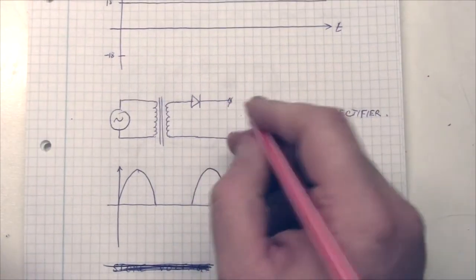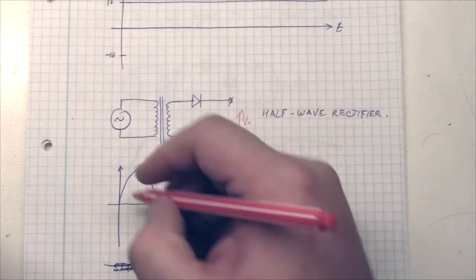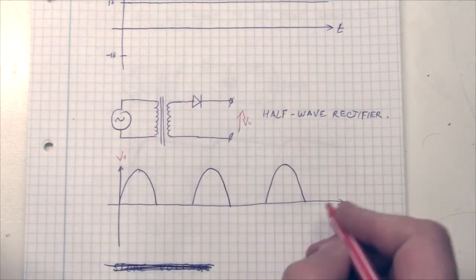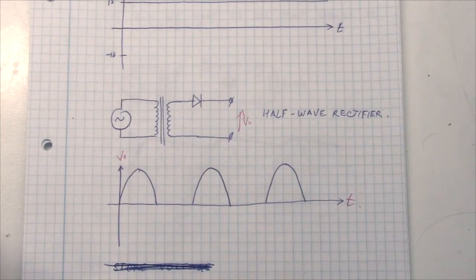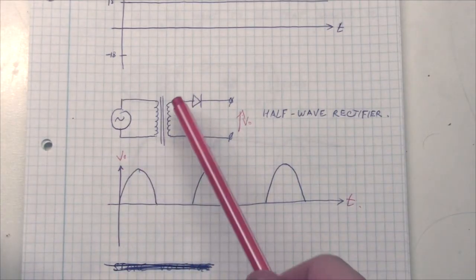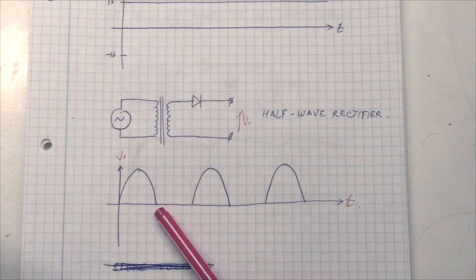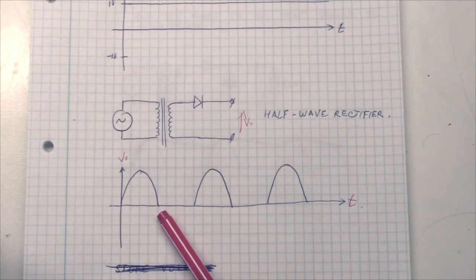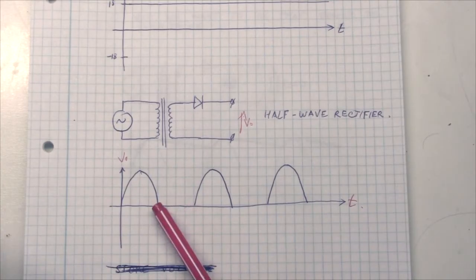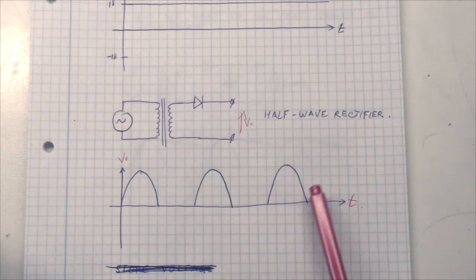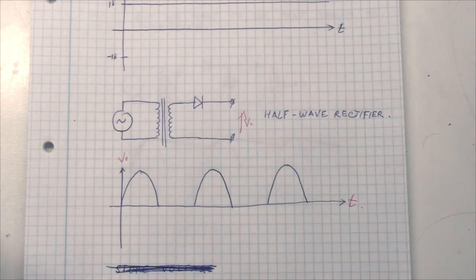So this is the output, V out, and this is what we are displaying here over time. So we will have these, when the diode conducts, we will have voltage coming through. And when the voltage is a negative polarity from the transformer, we will not have anything because the diode will block it. So we will get these half-waves, half of the sine wave. And that's why it's called a half-wave rectifier.